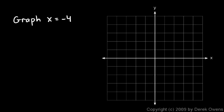Here I'm told to graph x equals negative 4, and we can just come over here 4 to the left. That point has an x coordinate of negative 4, and so does this point, and this point, and this point — any point that is 4 to the left has an x coordinate of negative 4. So I can graph this line. There you go — x equals negative 4 is a vertical line on which every point has an x coordinate of negative 4. If you're catching on, you can graph this without even plotting particular points.